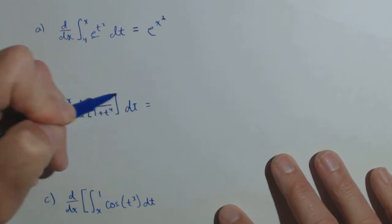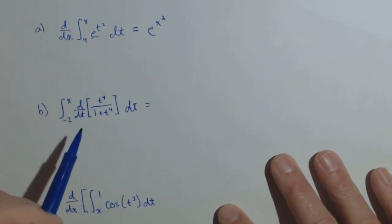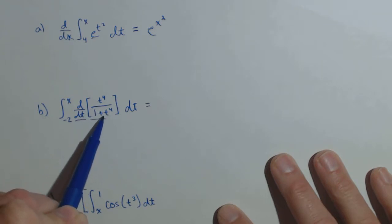Now here, we're gonna apply the first fundamental theorem of calculus, because what we need to remember is, an antiderivative of d dt of this is t to the fourth over one plus t to the fourth.